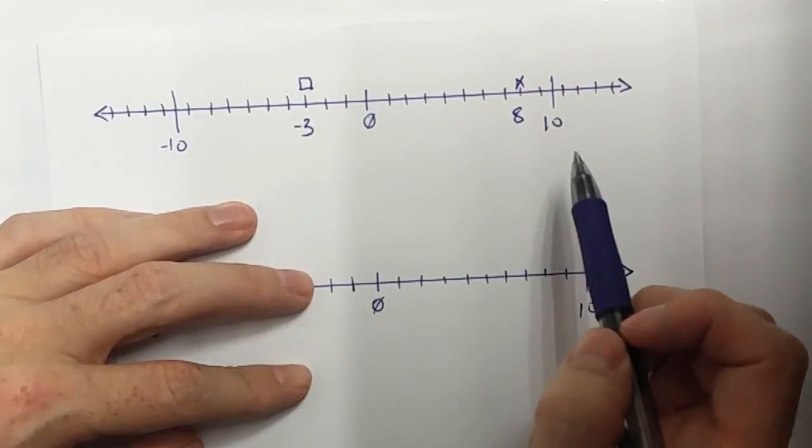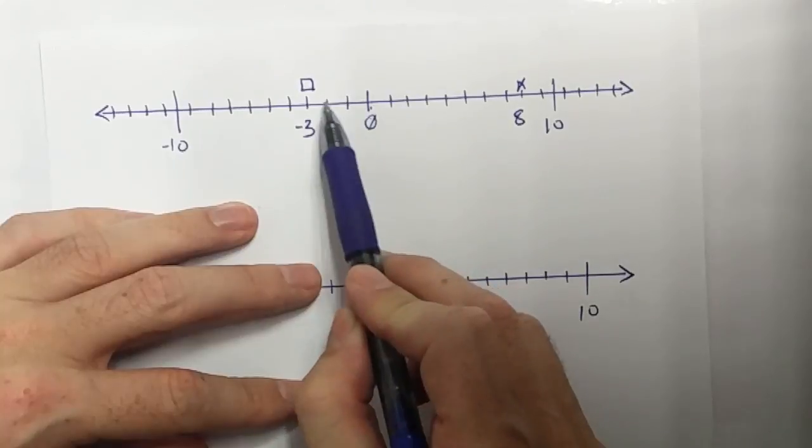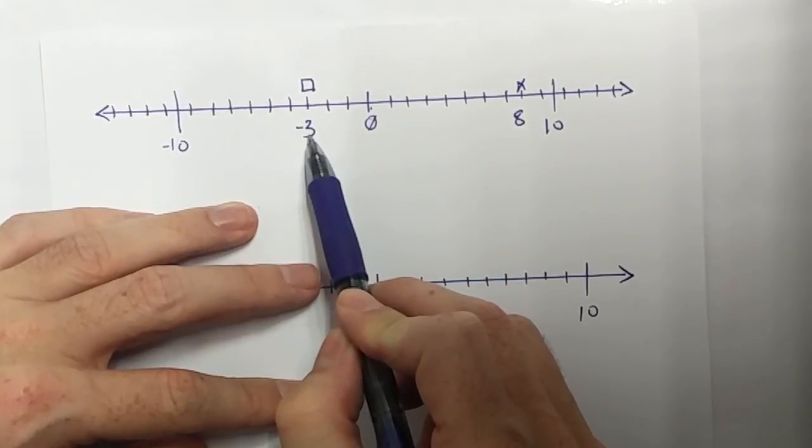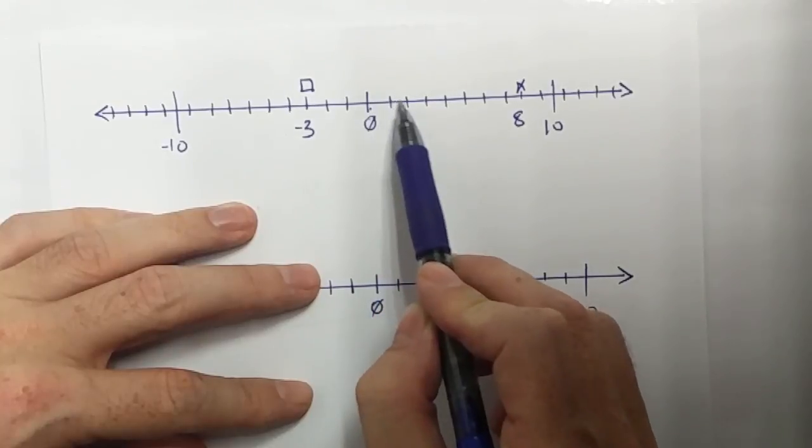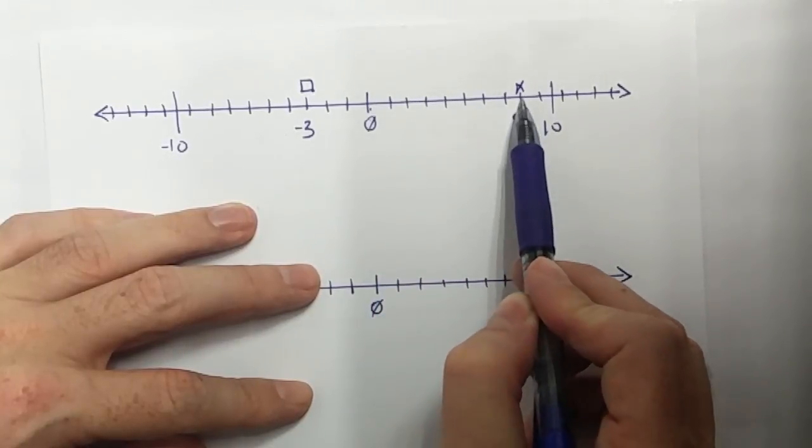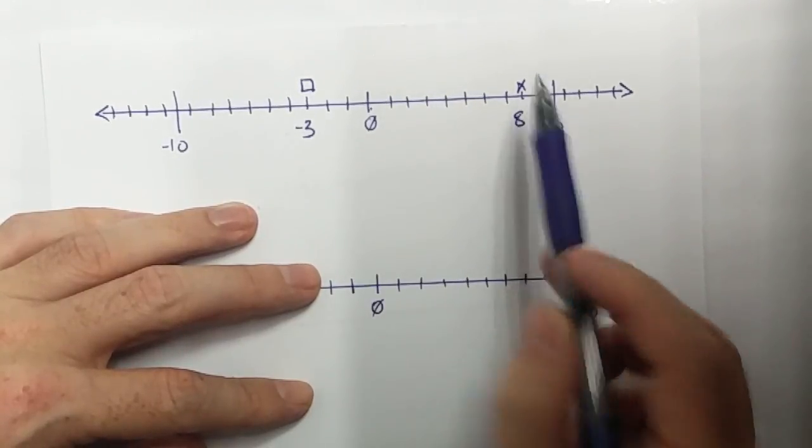These numbers represent distances from 0. So here is 0 and it is 1, 2, 3. It is a distance of 3 to the left of 0. The x is a distance of 1, 2, 3, 4, 5, 6, 7, 8 to the right of 0.